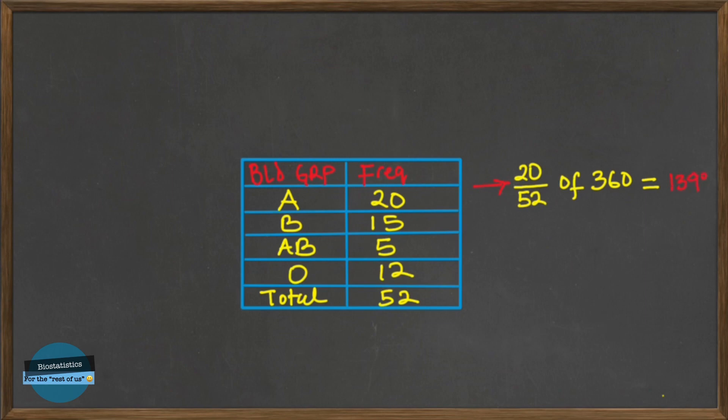For blood group B, there were 15 individuals that had this blood type. So we'll do the same. We're going to say 15 over 52 and we're going to multiply this by 360 and we have 103 degrees approximately.